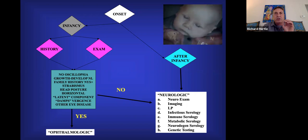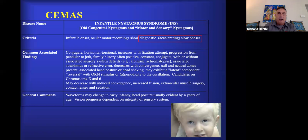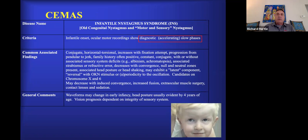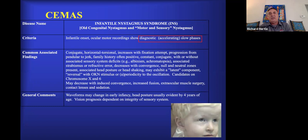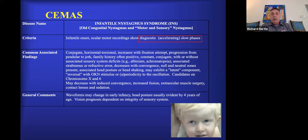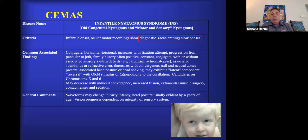The most common of the three diseases is infantile nystagmus syndrome — it used to be called congenital motor and sensory nystagmus, but those are really outdated and confusing terms. In the C-MASS system, each diagnosis has a classification box designed to live, grow, and change. A diagnostic criterion for infantile nystagmus is the waveform — the slow phase of the eye movement recording only occurs with INS, so I can look at a recording and tell which type of nystagmus a patient has.